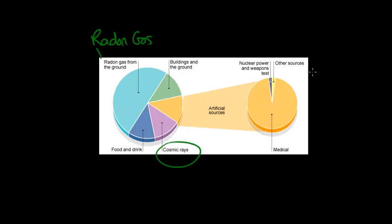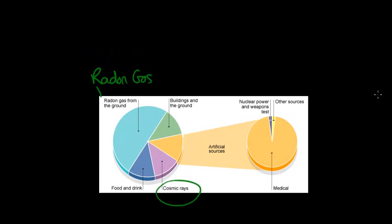So choose one of those for an example or two of those. So let's choose the biggest couple. Let's choose radon gas and cosmic rays because they're quite fun.